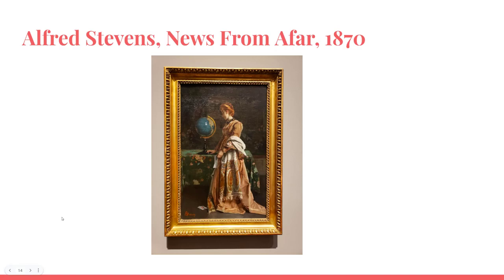In News from Afar, Stevens uses several elements to convey the painting's message. The composition places the woman in the center of the painting with the letter as the focal point. Her body language and facial expressions show she is reading a letter from a loved one, allowing an emotional connection with the viewer. She is dressed in a pale pink gown which contrasts with the dark colors of the room's interior, as the light source comes from the left side of the painting, creating a soft glow which illuminates the woman's face and hands. The color and light add a sense of intimacy and warmth to the scene, making it feel more personal.